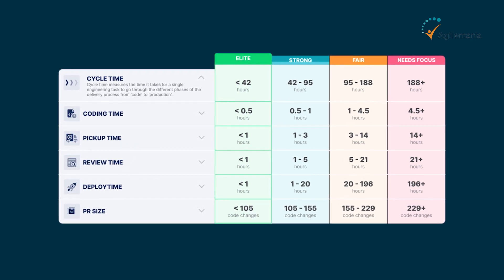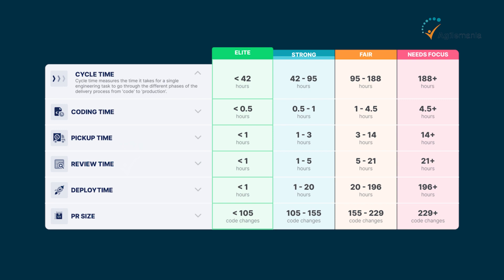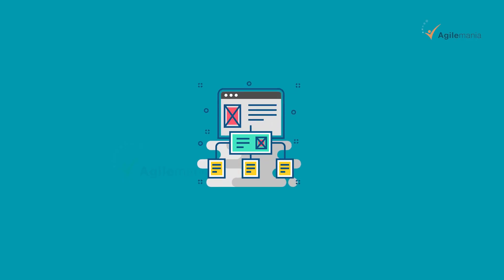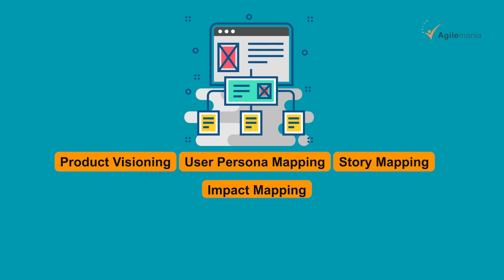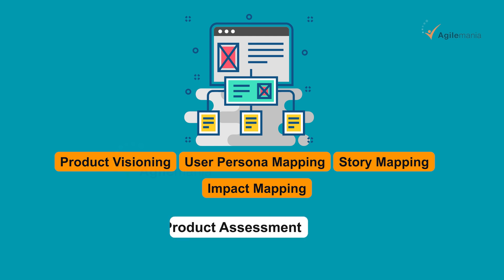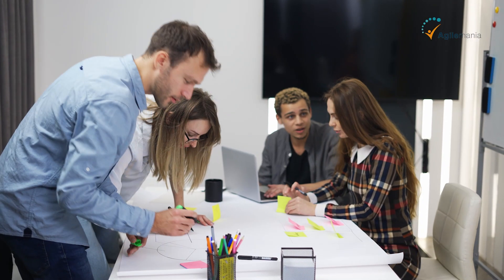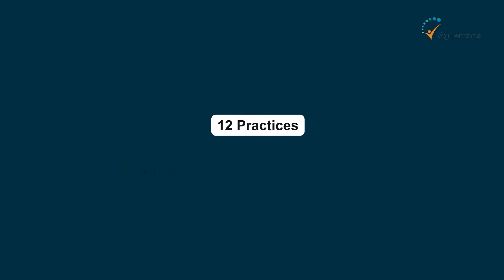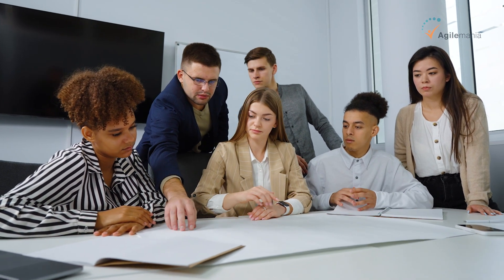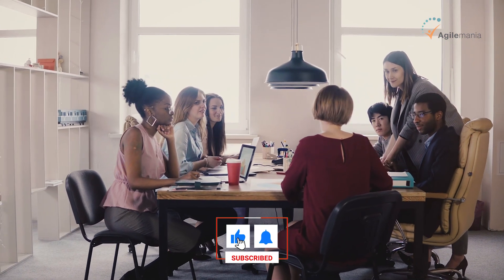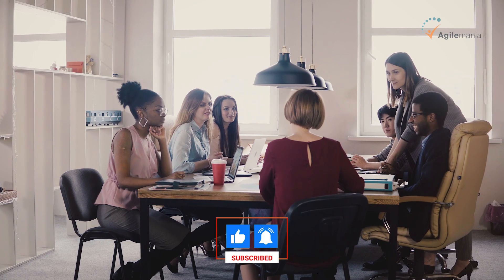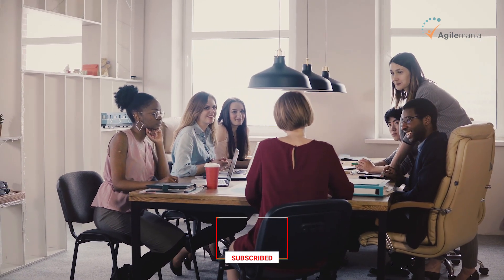Lead time is end-to-end; cycle time is one part of the process. For product assessment, useful tools are product visioning, user persona mapping, story mapping, and impact mapping. For technology, an excellent tool is an XP Workshop - take each of the 12 XP practices and see what percentage has been implemented in your system. This gives you visibility into areas like TDD, pair programming, and code standards, showing exactly where you stand technologically.